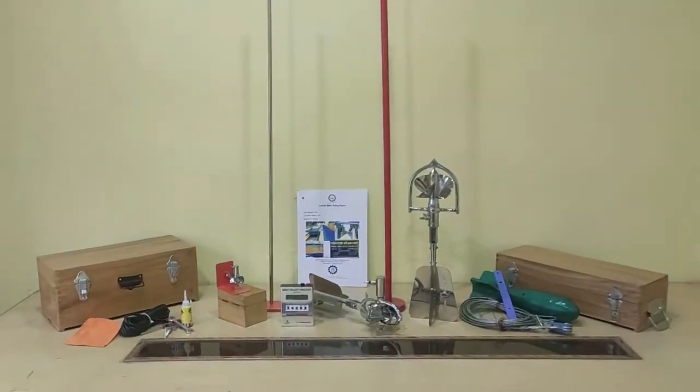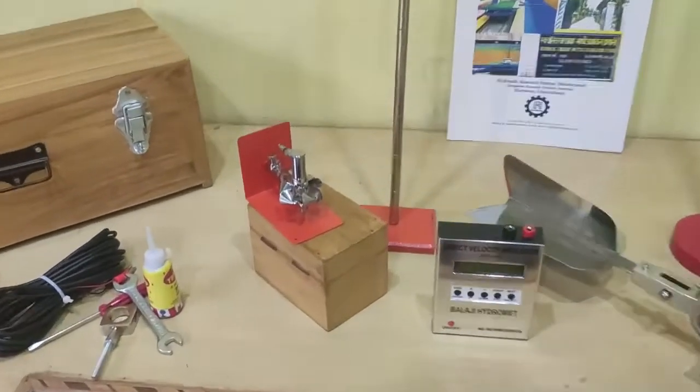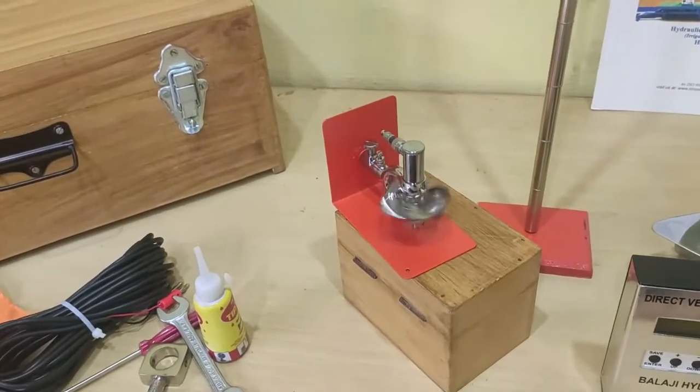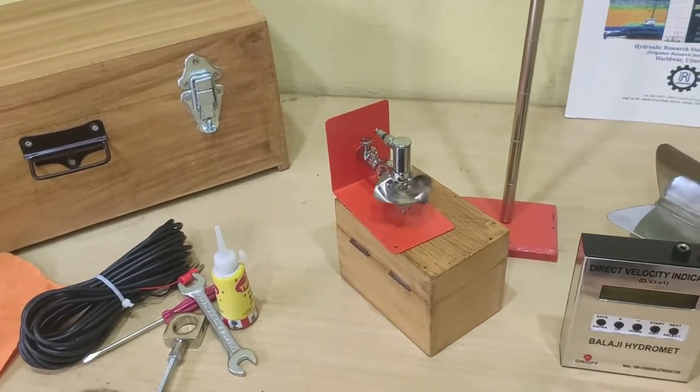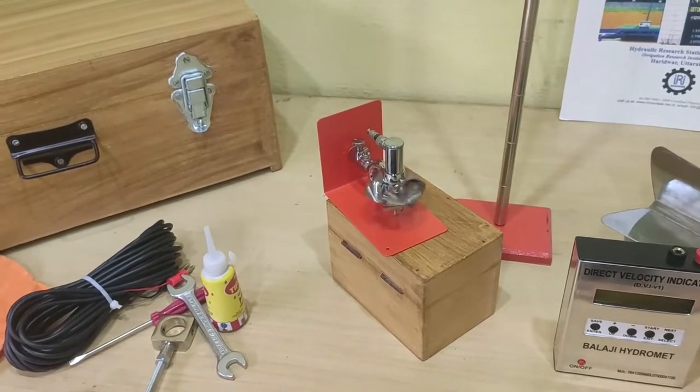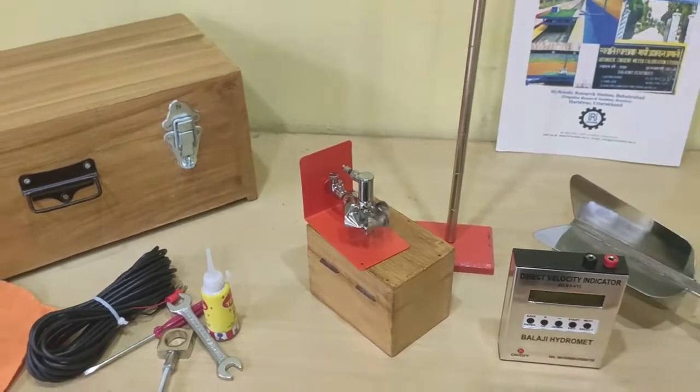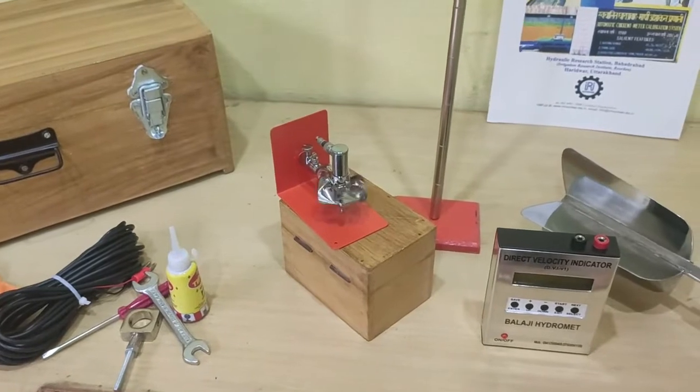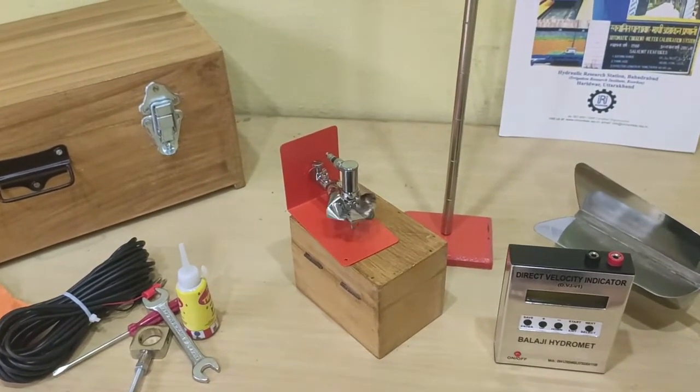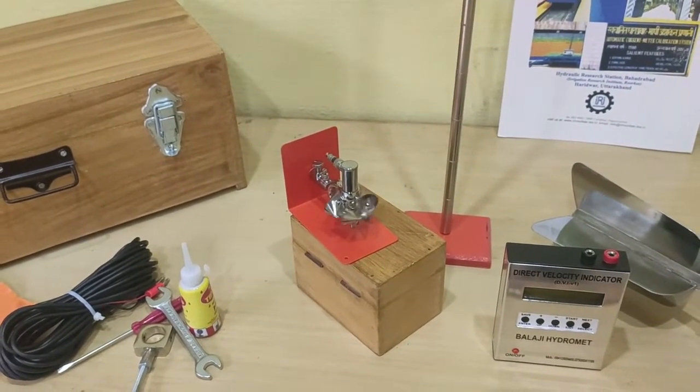First water current meter is called pygmy type water current meter or small type water current meter. In the European countries it's called discharge current meter. This water current meter is generally used in small streams and the maximum velocity of this type of current meter is 1.5 meter per second.